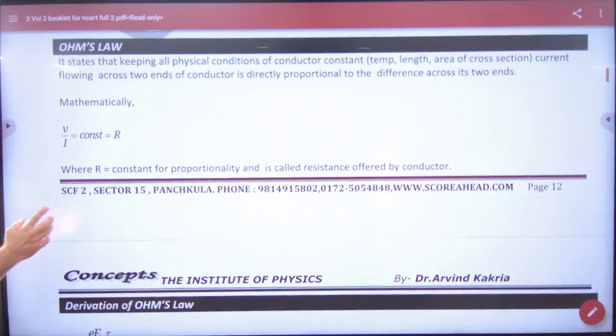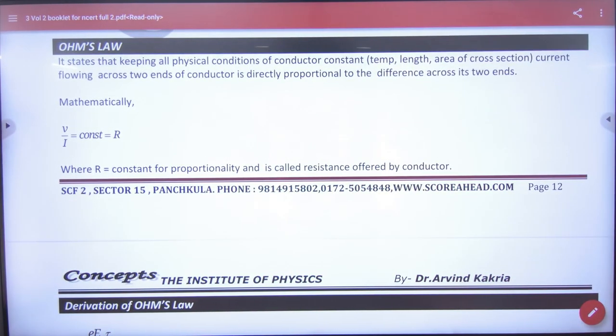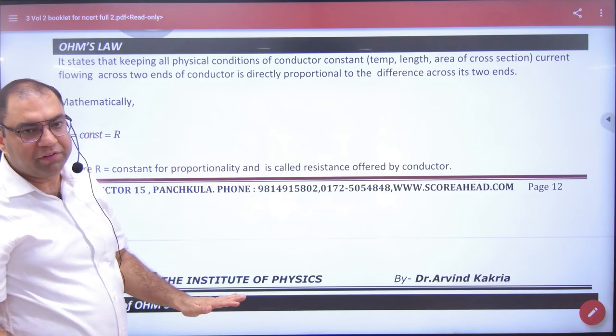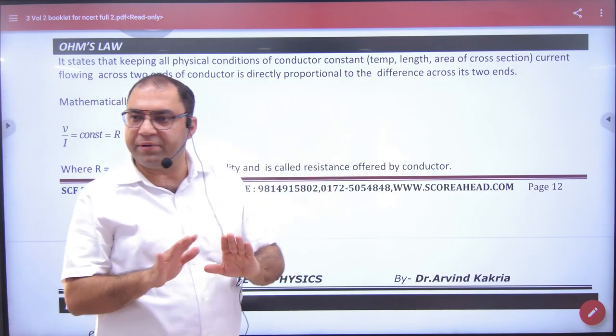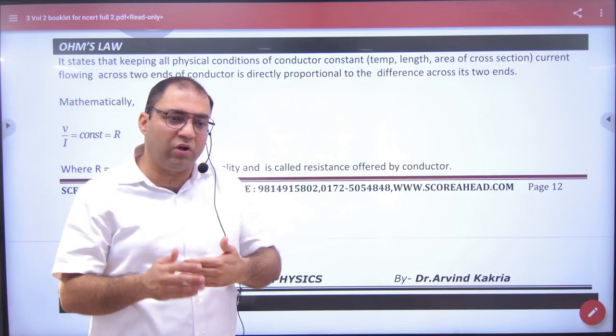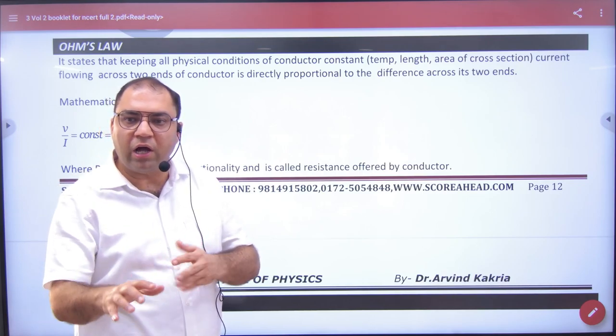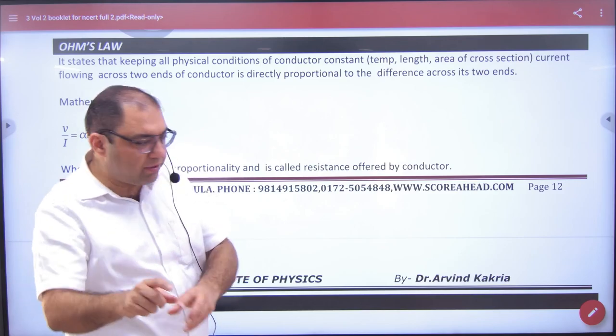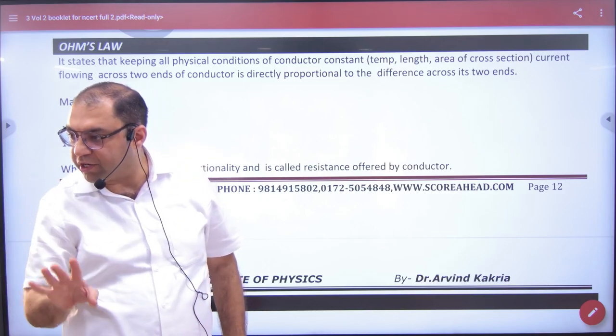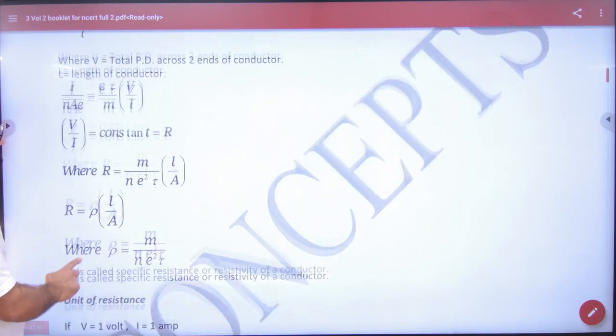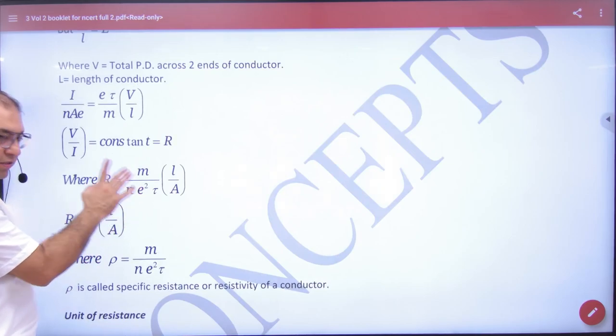So Ohm law: state and prove Ohm law. Statement: it states that keeping all physical conditions of conductor constant, physical condition means temperature should not change, because what will happen with temperature change? Velocity will increase, relaxation time will decrease, tau will decrease. And resistance, what have you shown? Resistance is inversely proportional to tau. Check whatever resistance value. Check R, R inversely proportional to tau which will increase.